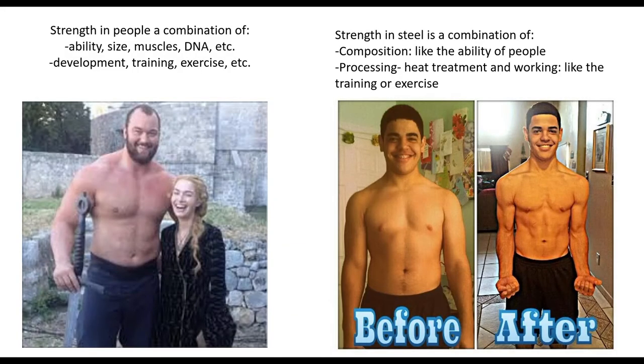If I look at steel, this of course is the mountain from the Game of Thrones, and this is a young kid who's gone from not exercising to exercise to build his muscles. Just like strength in people is a combination of their DNA, their parents, and just their physical size, their nutrition and the things they do, it's also a matter of their development, how much exercise they do. So this guy is never going to be the mountain, but he can get stronger by exercising.